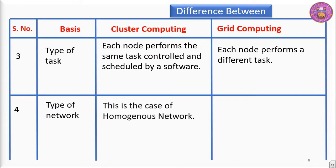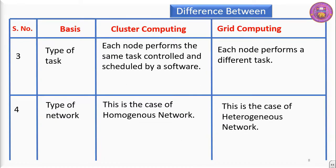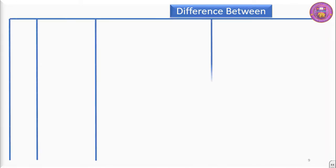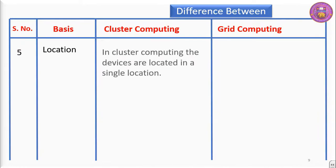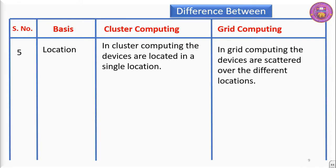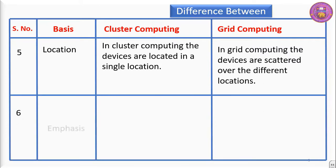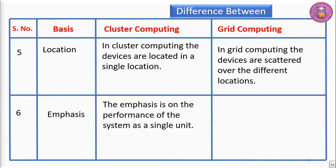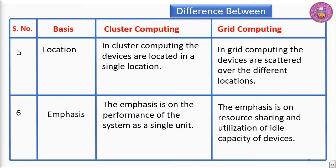Regarding type of network: cluster computing uses a homogeneous network, whereas grid computing uses a heterogeneous network. Regarding location: in cluster computing, devices are located in a single location, whereas in grid computing, devices are scattered over different locations. Regarding emphasis: in cluster computing, the emphasis is on the performance of the system as a single unit, whereas in grid computing, the emphasis is on resource sharing and utilization of the idle capacity of devices.